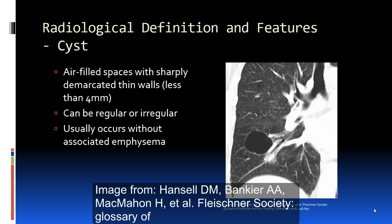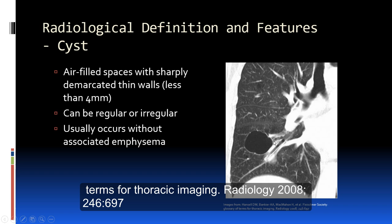First, a cyst is defined as an air-filled space sharply surrounded by a really thin wall — usually less than 2 millimeters, though by definition anything less than 4 millimeters qualifies. The shape can be regular or irregular, usually more round. It is usually not associated with emphysema, and can be distinguished from emphysema by the presence of blood vessels around the peripheral wall of the cyst.